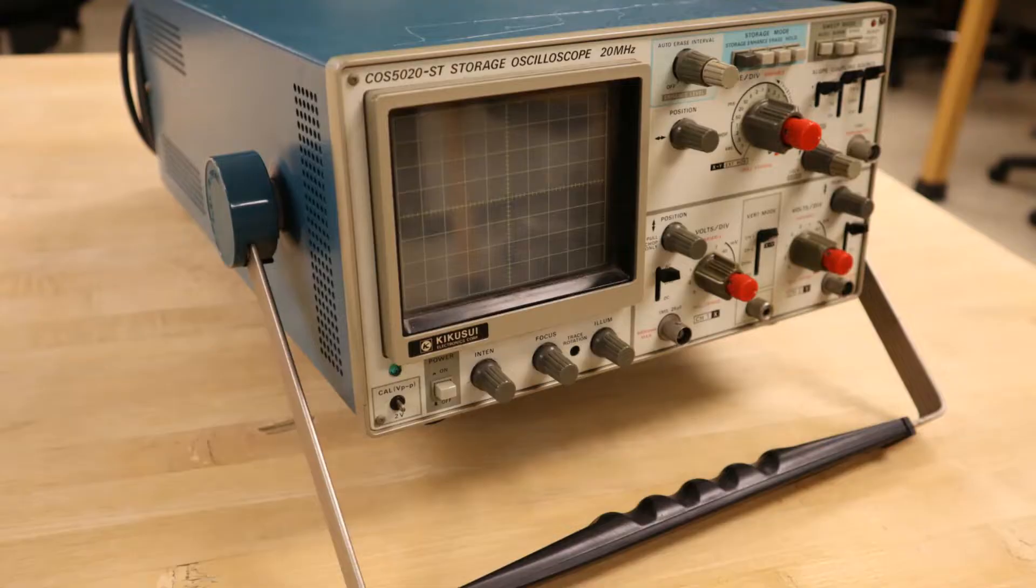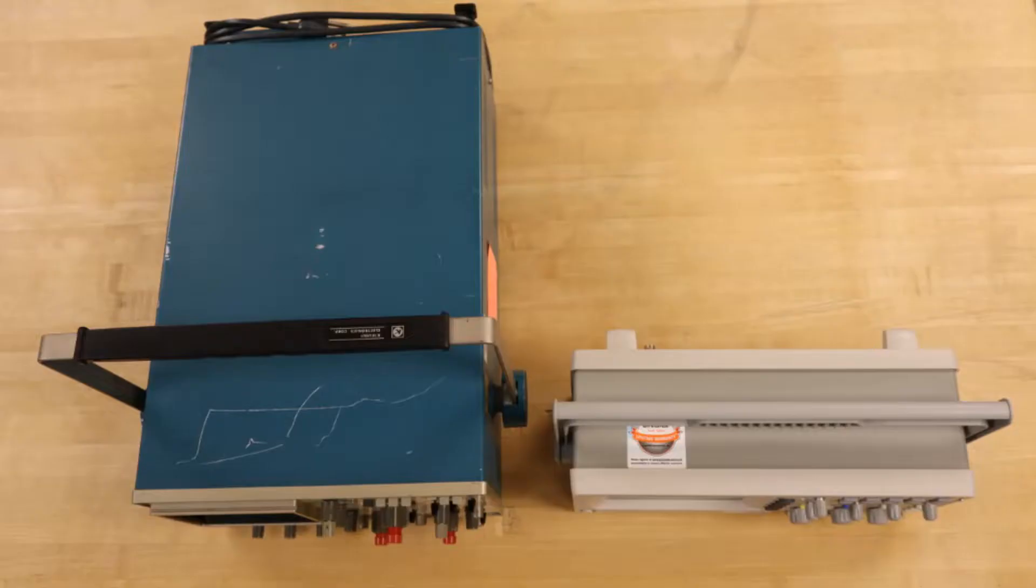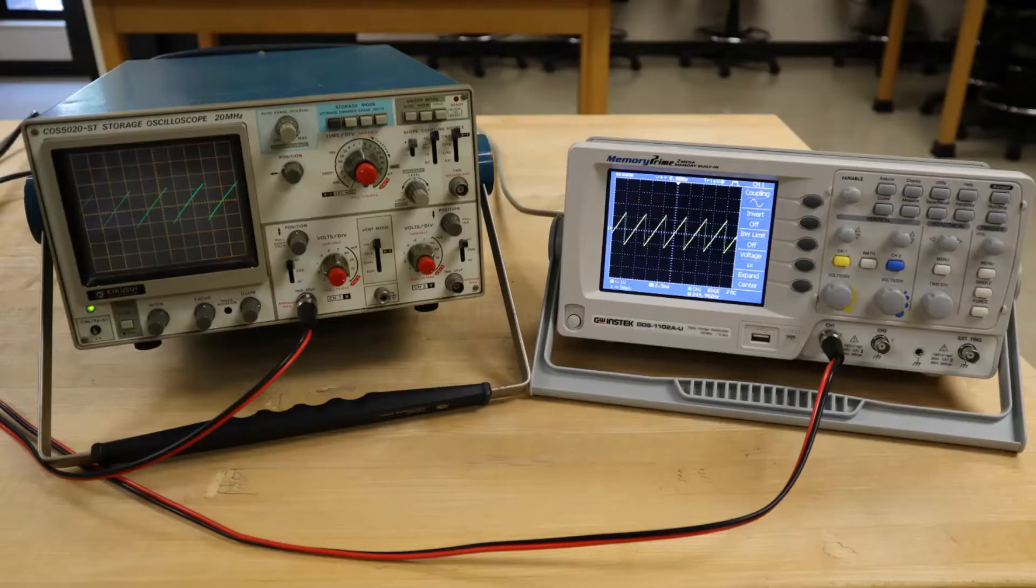While analog oscilloscopes are still very effective, it has become more common for scientists and engineers to use newer digital models. Other than the substantial difference in size and weight, digital oscilloscopes do away with the bulky cathode tube, using instead some form of LCD screen to display a digitized version of the voltage plot. It is important to realize that this technology is only possible because of high precision analog to digital signal converters.